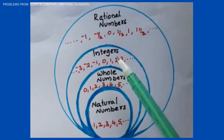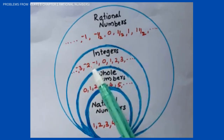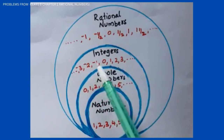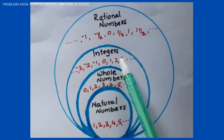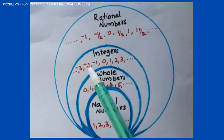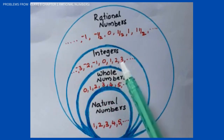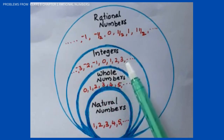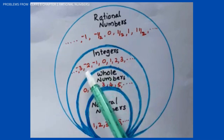What are integers? Integers are the positive and negative numbers. For example: minus 3, minus 2, minus 1, 0, 1, 2, 3, etc., up to infinity.